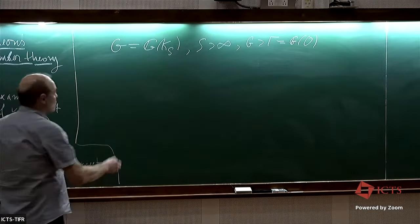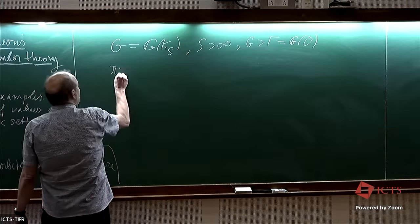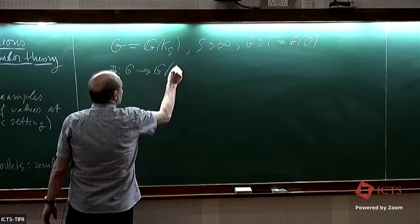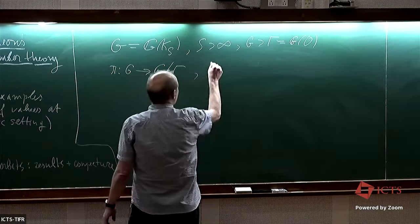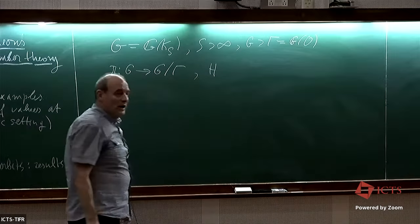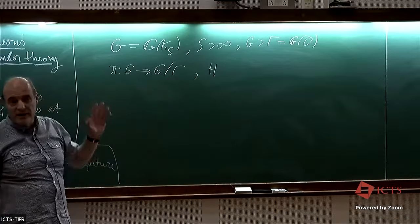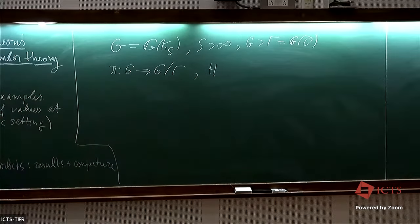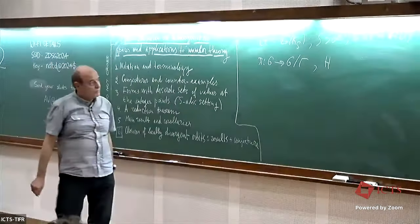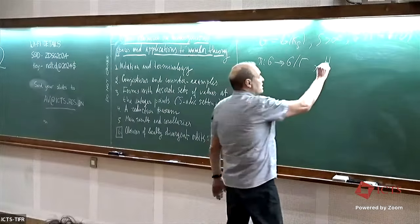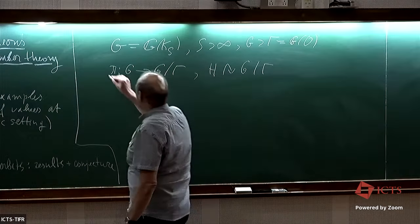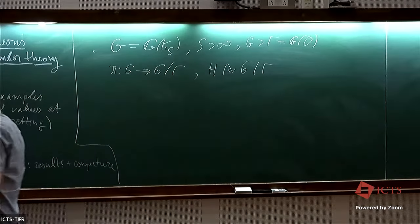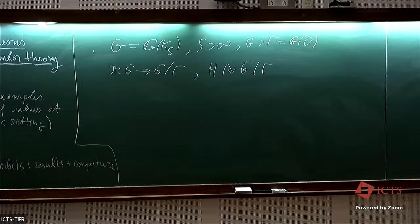We have the natural projection to the quotient space G/Γ, and we have a subgroup H. Most of the time, as I said, this will be an algebraic torus, but not all the time. H is acting naturally on G mod Γ. So this is the general, adelic setting.